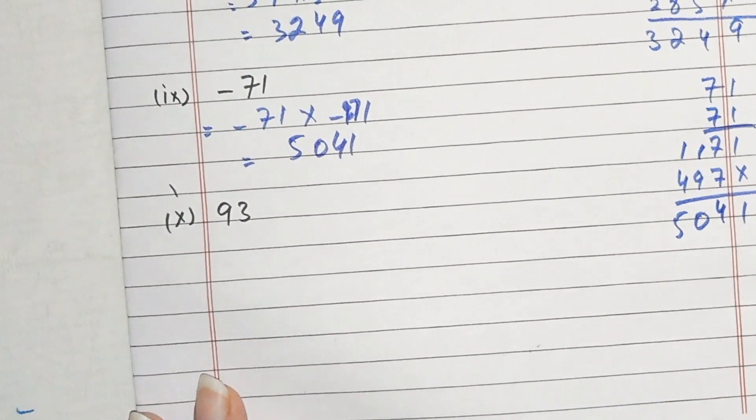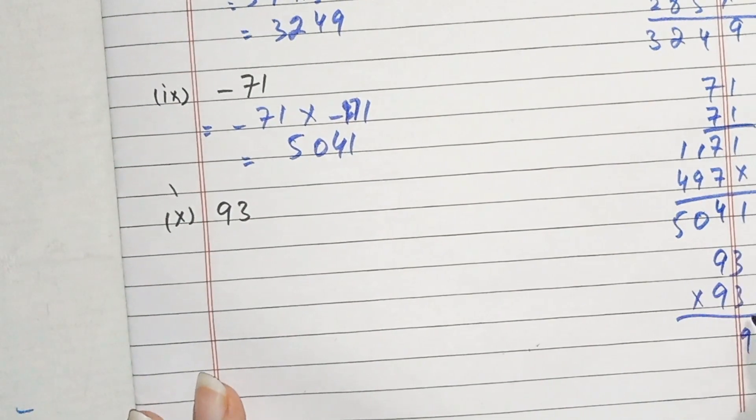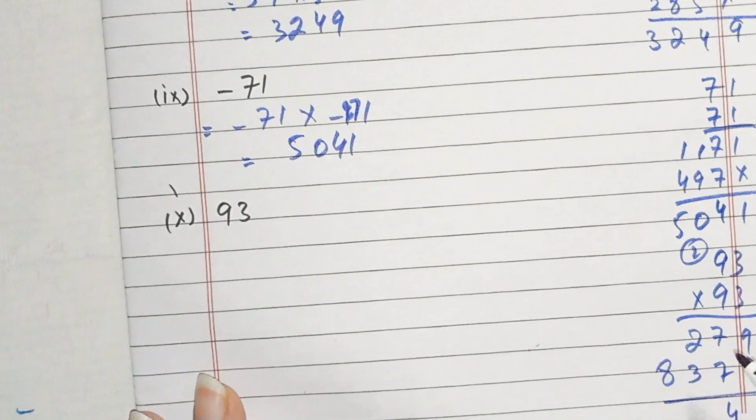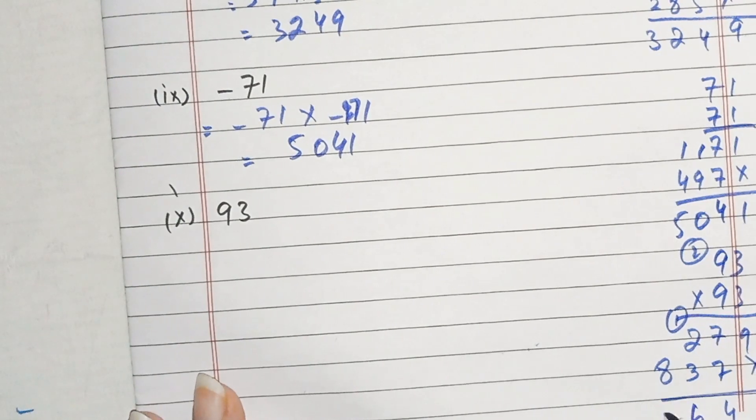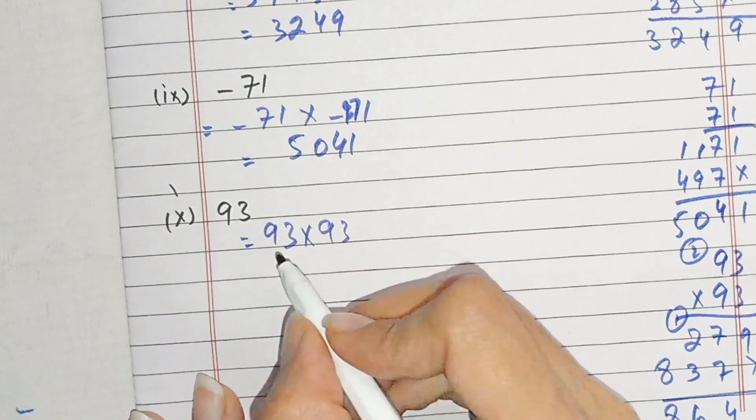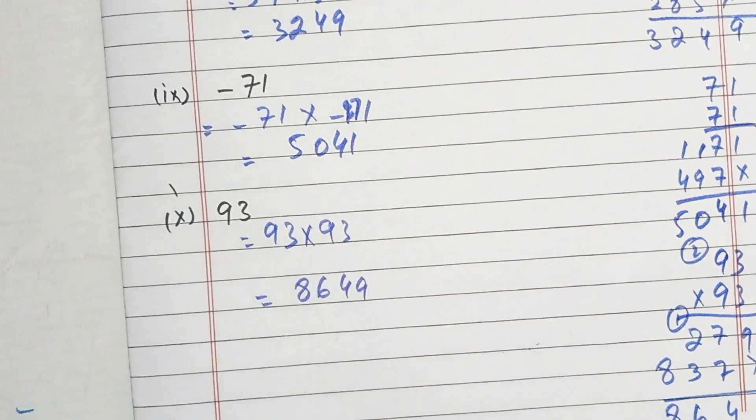Part 9, 93 multiply by 93. 3 times 3 equals 9, 3 times 9 equals 27. We get 93 multiply by 93 equals 8649. Square means 2 times 2, you multiply the number by itself.